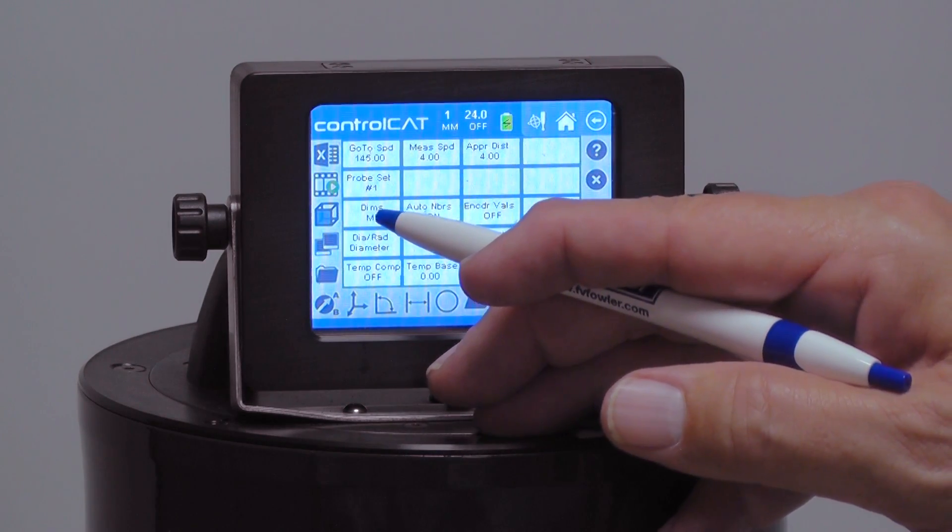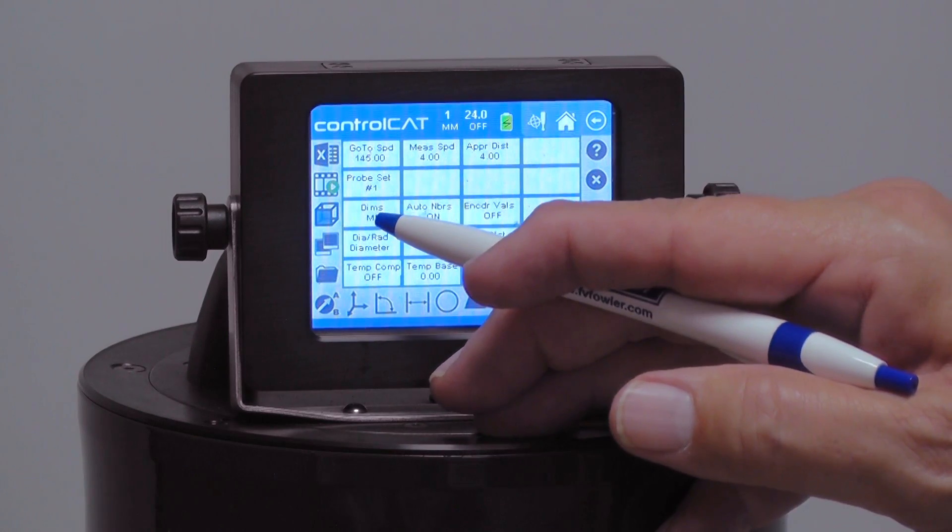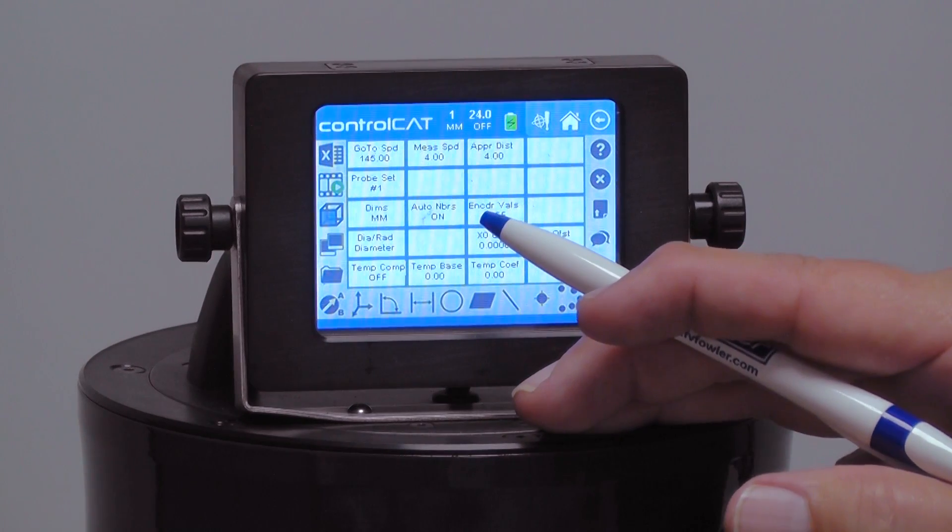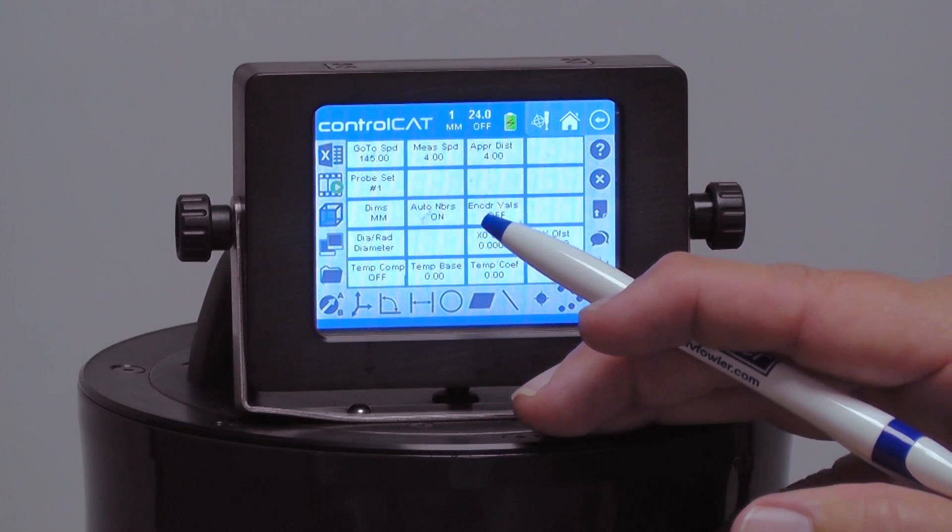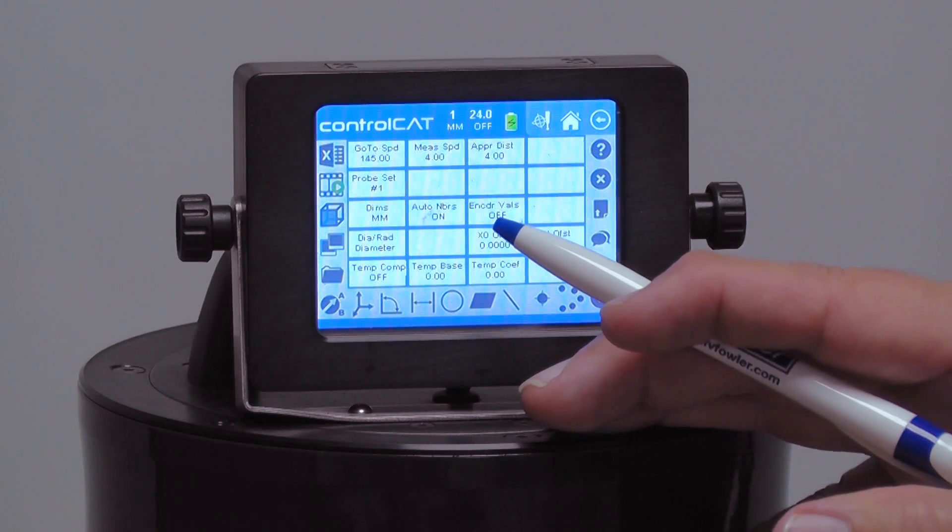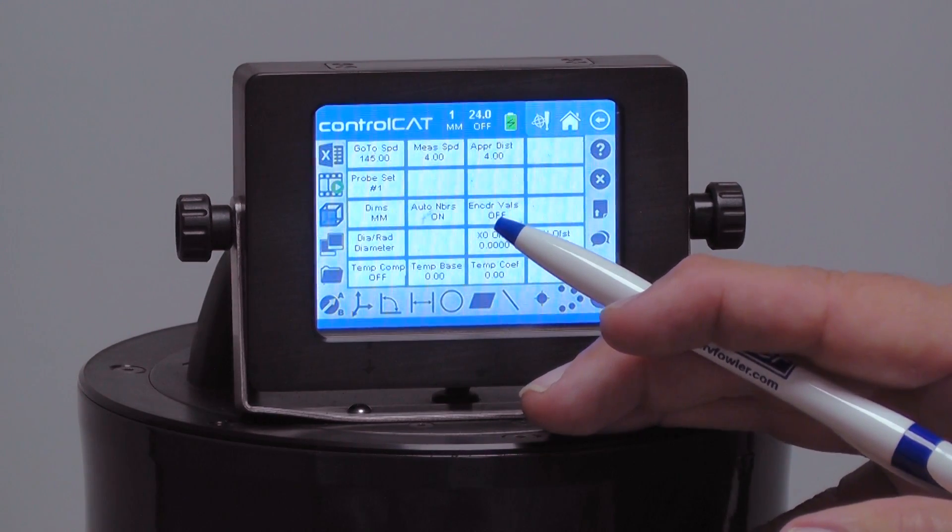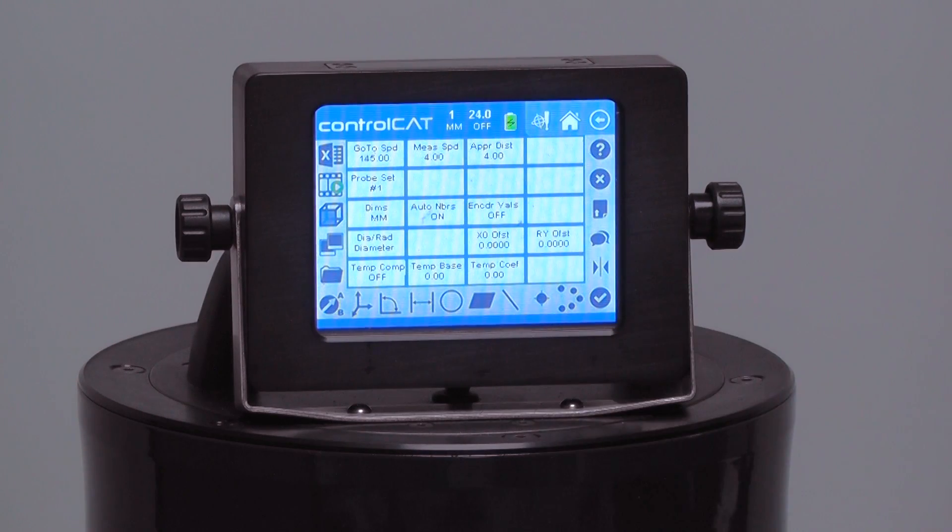We also have this is where we switch between inch and metric. It just toggles between inch and metric because those are only two choices. Auto number is on, which is the default, and that's how it probably should be. That's going to mean that every time we take a new dimension, it's going to number it one through whatever. So if we have five diameters on my program, it's going to be diameter one, two, three, four, and five.